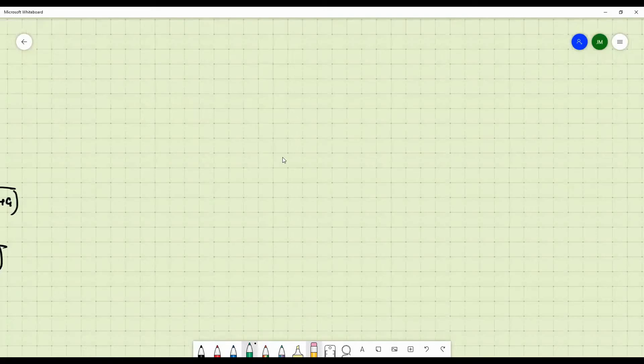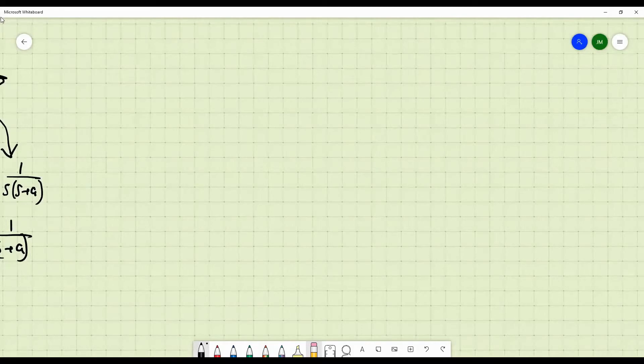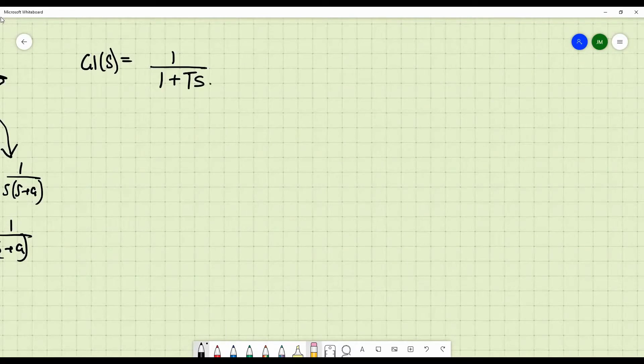We have just now derived the transfer function G1 of S as 1 by 1 plus S. Now in a practical scenario, how do you construct such a type of system? In electrical networks, you construct such a system by a simple RC circuit.